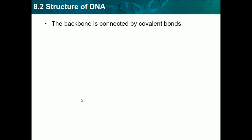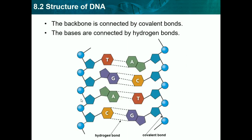The backbone is connected by covalent bonds, while the bases are connected by hydrogen bonds. Covalent bonds are bonds between nonmetals, but we don't need to know that in biology. Hydrogen bonds are just an attractive force between two atoms. If we look at the diagram, it looks exactly like the nucleotide we saw earlier — we have the phosphate group, the sugar, and the nitrogen base.